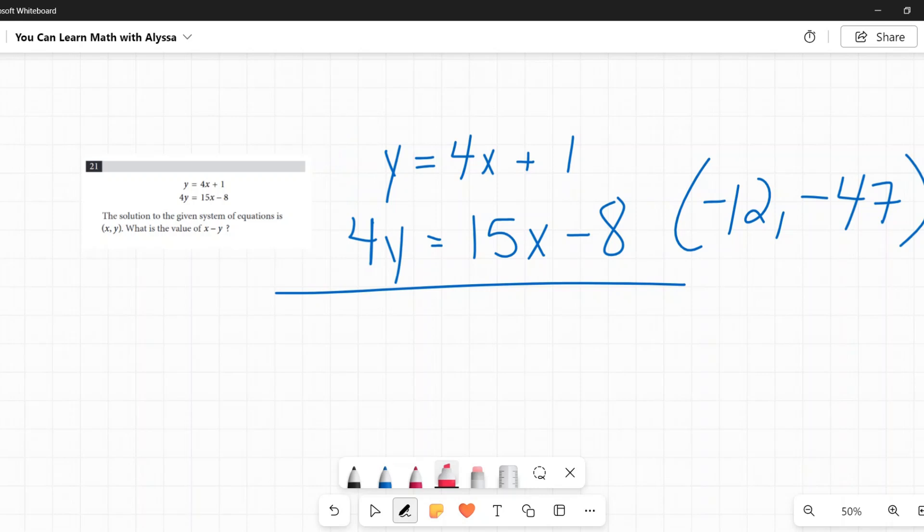So when I multiply y by negative 4, I get negative 4y. When I multiply 4x times negative 4, I get negative 16x. And when I multiply 1 times negative 4, I get negative 4. I'm just compressing. You can write all these out separately, obviously.